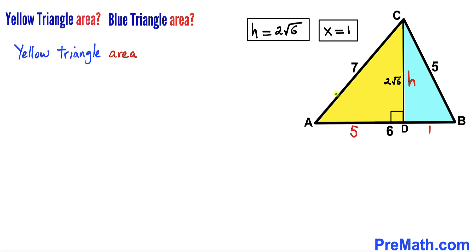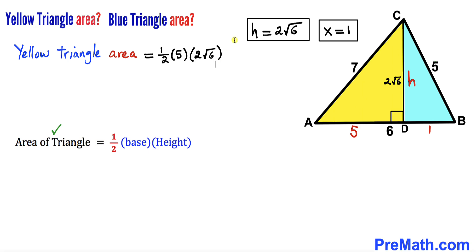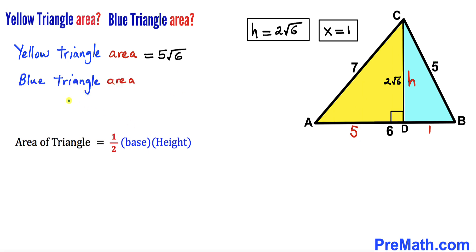Now let's calculate the area of the yellow triangle. Using area = one-half times base times height, the base is five (AD) and the height is 2√6. So the area of the yellow triangle = ½ × 5 × 2√6 = 5√6 square units.